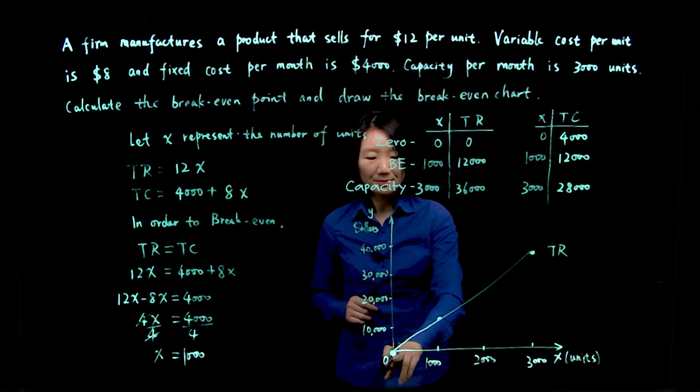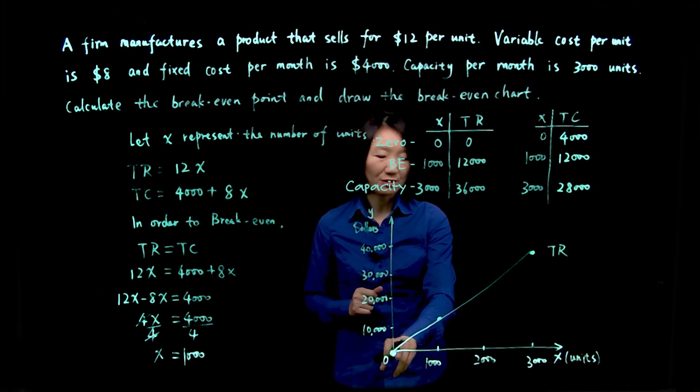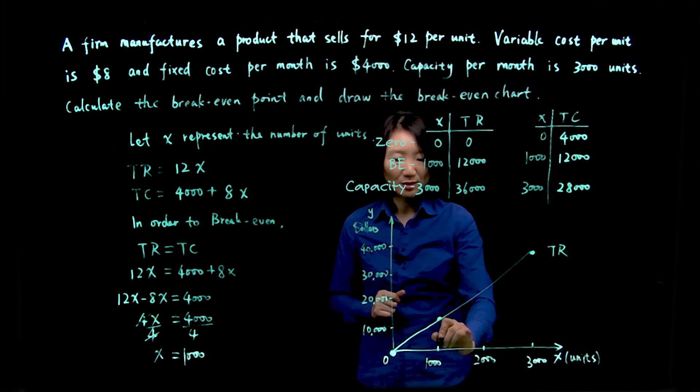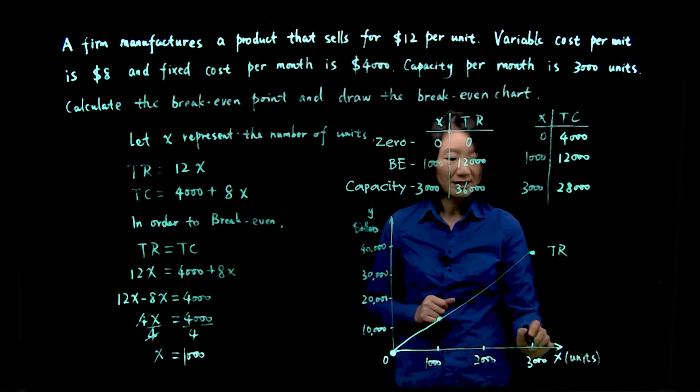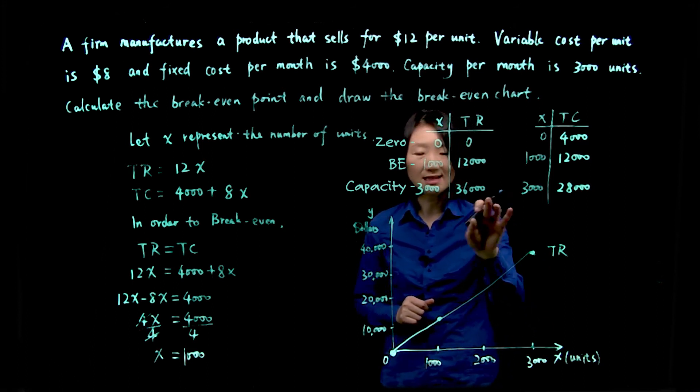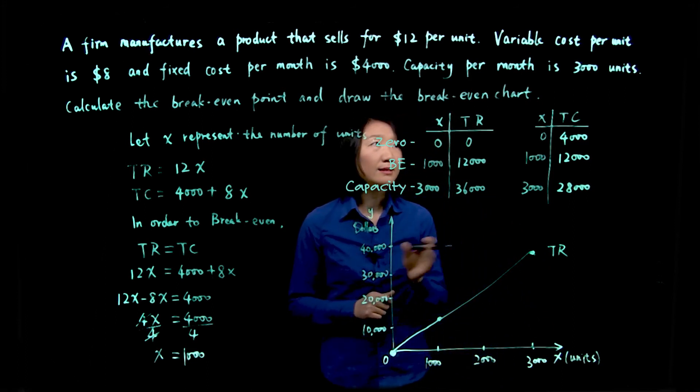As you can see, if your units is zero, total revenue is zero, units is 1,000, your revenue is 12,000. If your units is 3,000, your total revenue is 36,000.